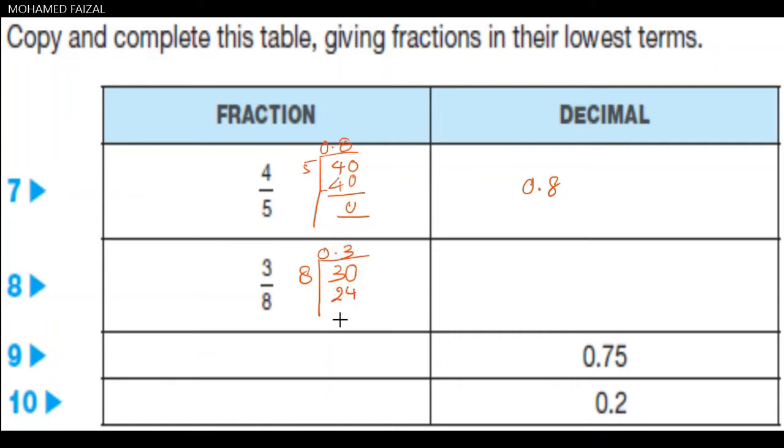By subtracting 30 and 24 we get 6 as the remainder. Now we can add one more 0 because 6 cannot be divided by 8. Now we have to divide 60 by 8. In the 8 table we have 7 times 8 is 56. By subtracting these two we get the remainder as 4.